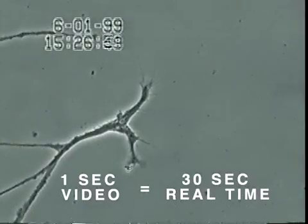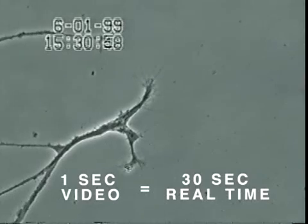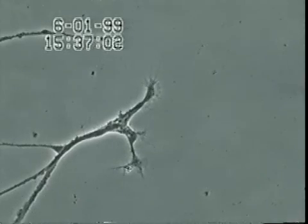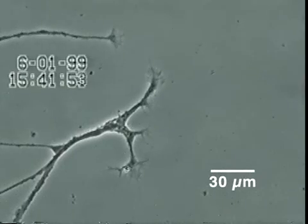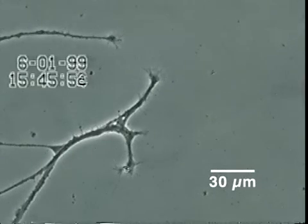In this experiment, neurons also isolated from snail brain tissue were grown in culture for several days, after which very low concentrations of mercury were added to the culture medium for 20 minutes.